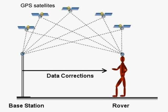RTK corrections are typically more localized. The further a rover is from the base station, the less accuracy it will have. This has to do with different atmospheric conditions at different locations. For this reason, radio links have been the most common way to transport RTK correction data.